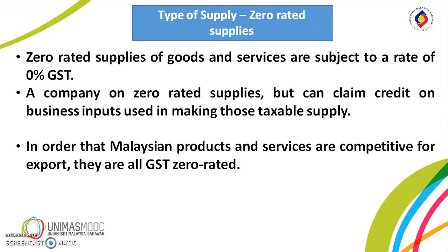Examples of zero-rated supplies include essential products such as basic goods items, electricity up to 300 units, treated water for domestic consumption, and essential medicines, which are all zero-rated. In order that Malaysian products and services are competitive for export, they are all GST zero-rated.